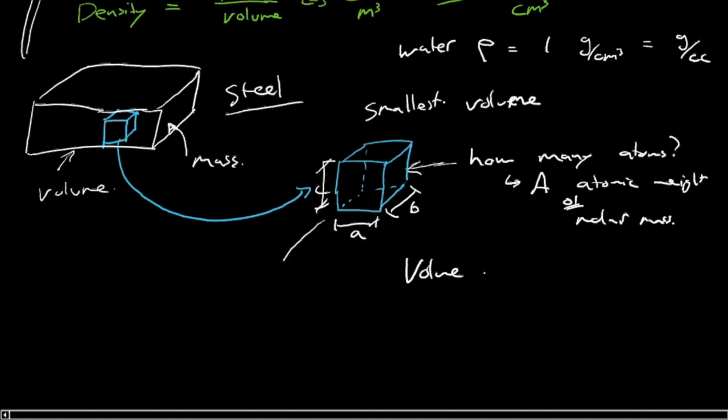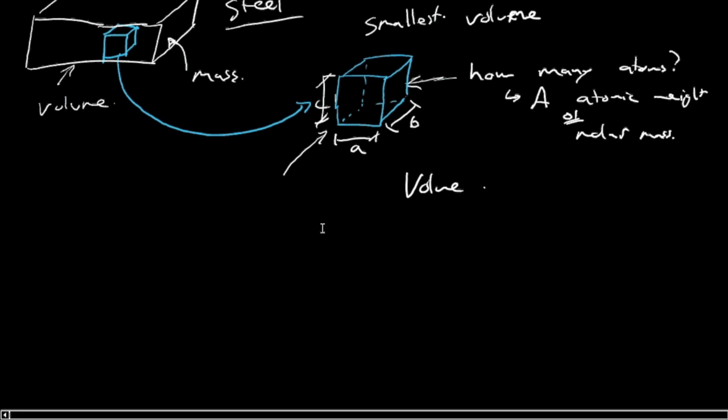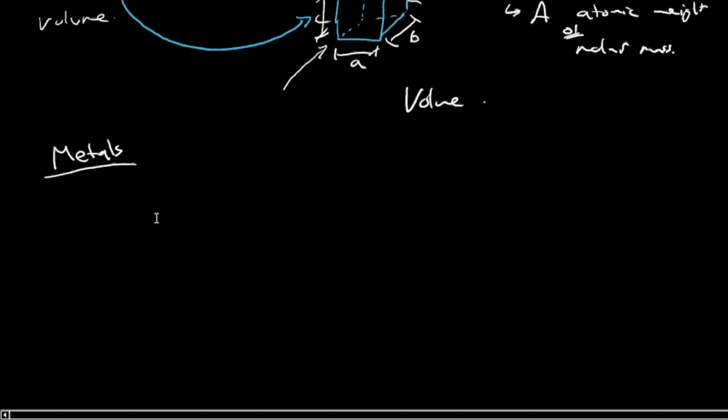And it turns out that, and I've chosen this cube on purpose, because it actually turns out that some materials have an arrangement of atoms that lends itself well to being broken down into a simple shape, like a simple geometric solid shape, like a cube. Now, not all materials can proceed that way.